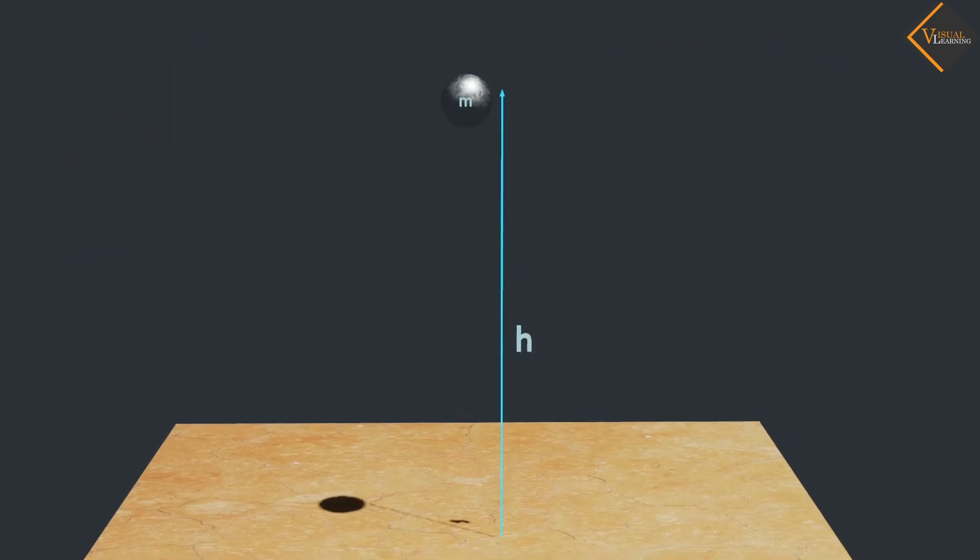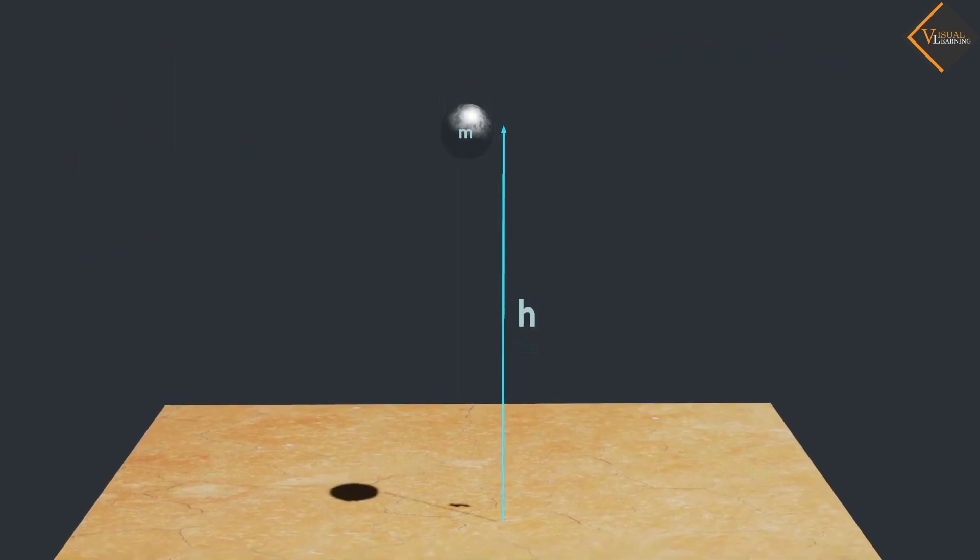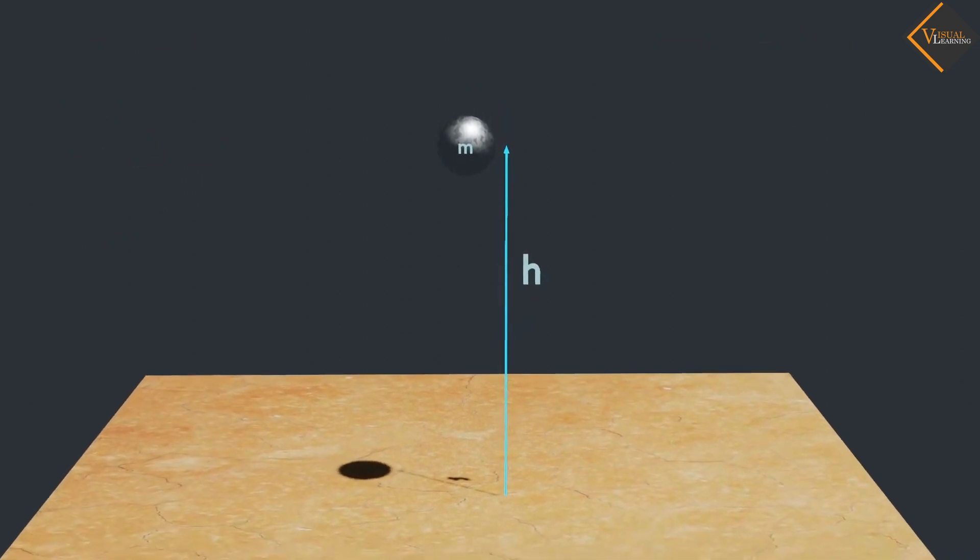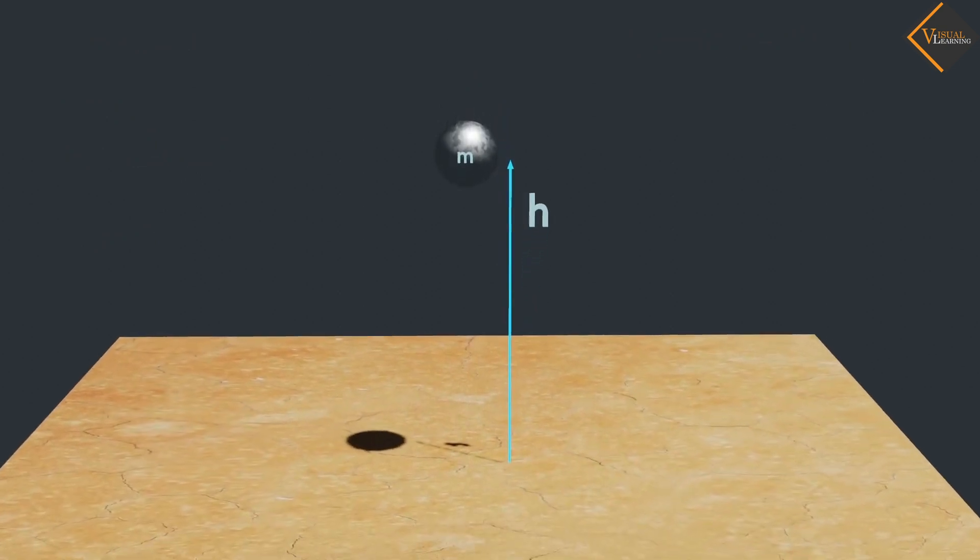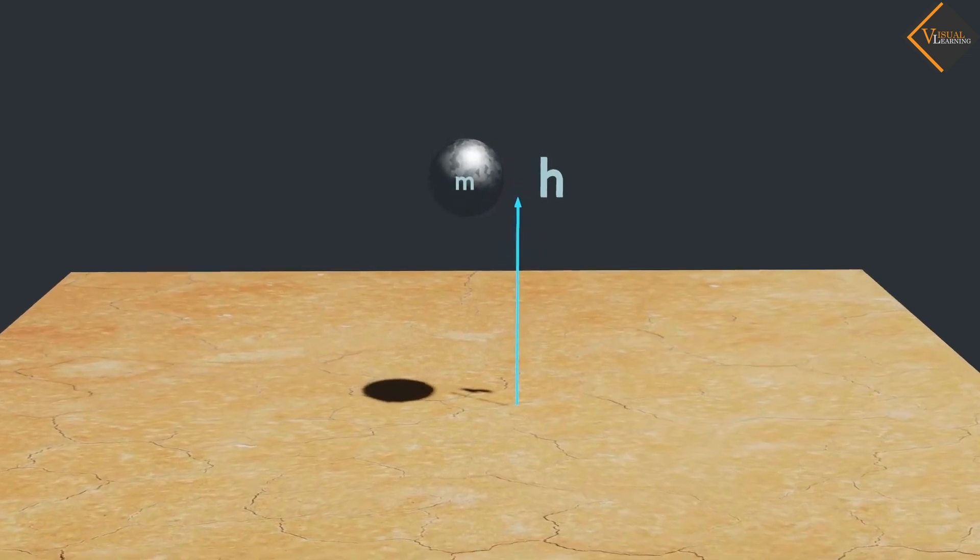Now, let the ball fall under the influence of gravity. As the velocity of the ball increases, the kinetic energy increases.